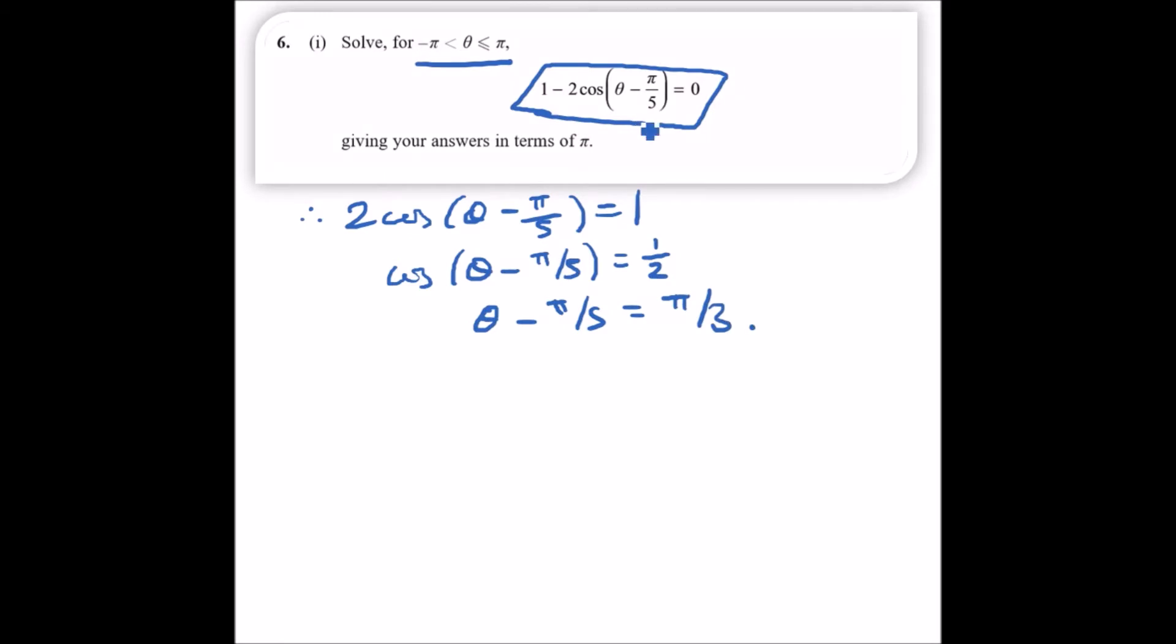Notice that we have this term θ - π/5, and this is the interval we have. All we need to do is rewrite this interval with θ - π/5.